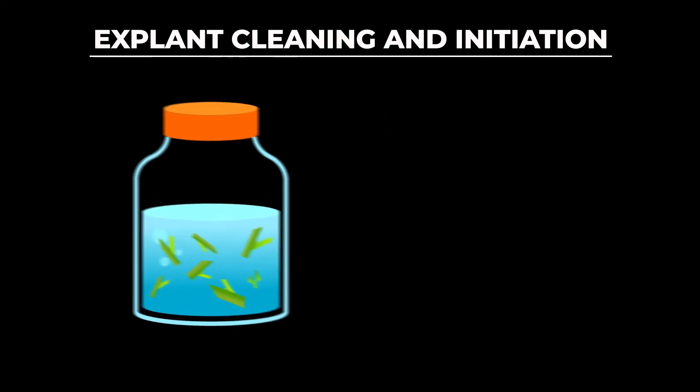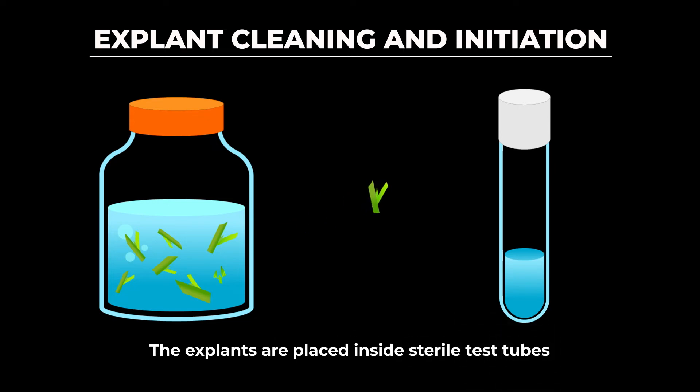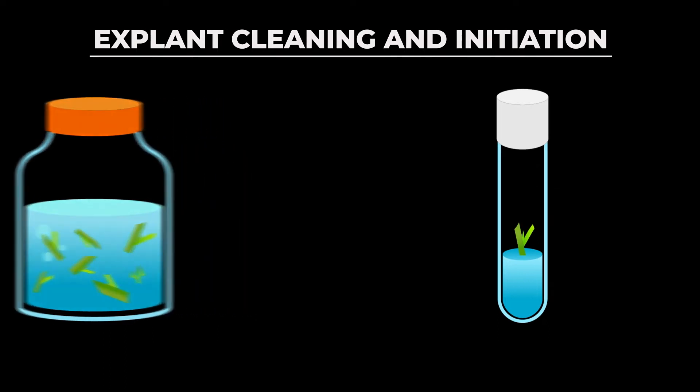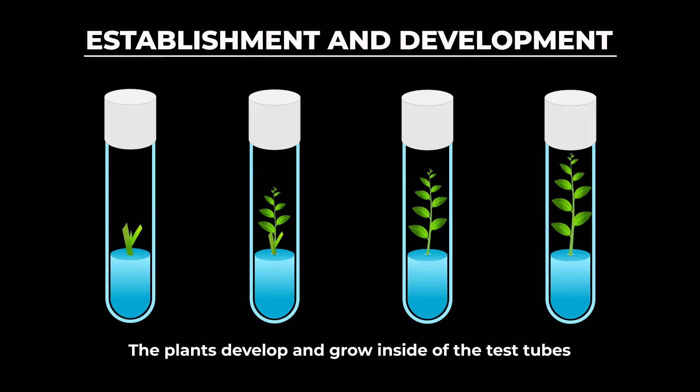Once the explants are clean and sanitized, they can be placed into a test tube. Inside this sterile test tube is a solution that will help the plant grow and develop. As our little explant grows, it will develop into a juvenile plant, tall enough to be divided.